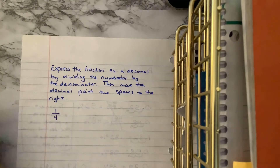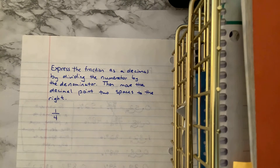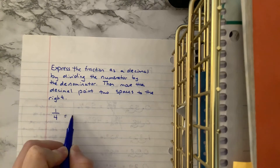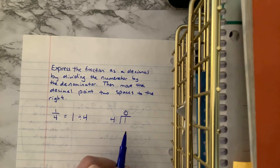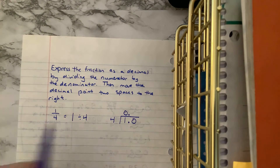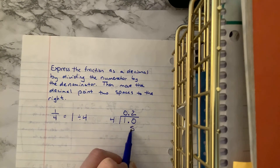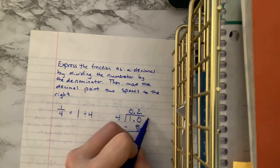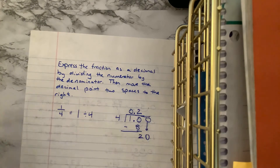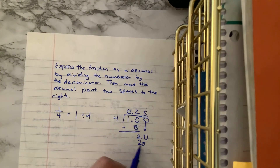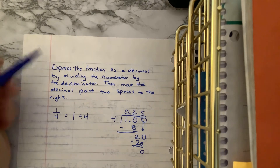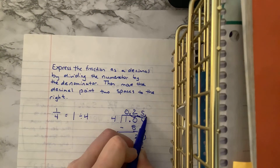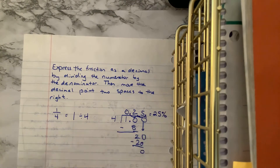Let's consider one-fourth. Remember fractions are division, so we do one divided by four. Four does not go into one, so we add a decimal point and a zero. Four goes into ten two times. Two times four is eight, with a remainder of two. Add a zero, bring it down. Four goes into twenty five times with no remainder. Now we have our decimal: twenty-five hundredths. Move the decimal point one, two spaces to the right — we get twenty-five percent.